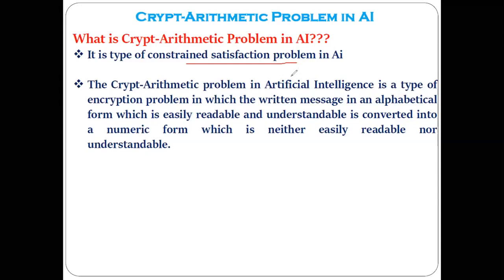We have discussed various kinds of constraint satisfaction problems, each with different constraints. By satisfying those constraints we can solve different kinds of problems — like graph coloring, map coloring, the N-Queens problem — and today we are discussing another example related to the crypt arithmetic problem.